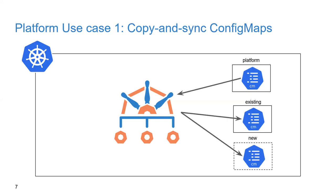We'll have a namespace called 'platform' where we define resources to consume across the cluster. We want Kyverno, once we install a policy, to lay that config map down across existing namespaces and also new namespaces created after that point. This is useful in brownfield, greenfield, and combined environments — which is probably what most teams will encounter.